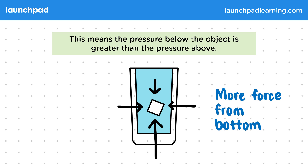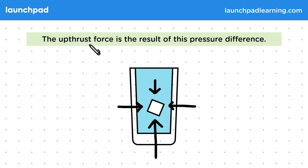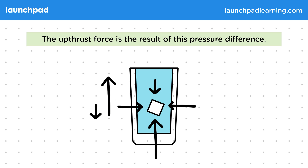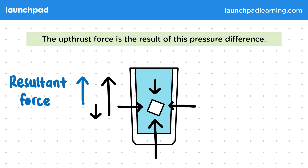So what do we call the resultant of these pressure forces? Well, the upthrust force is a result of this pressure difference. The resultant upthrust force is the difference between the vertical forces resulting from pressure. This force only acts upwards, opposite to weight, and this is because the horizontal forces are equal and opposite.